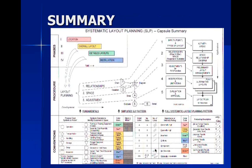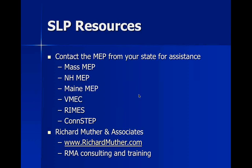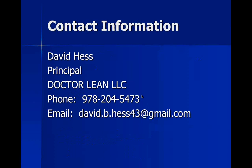I provided this last slide as a summary of everything we've talked about today — from the four phases to the three steps and the various diagrams. This is a capsule summary of what we've talked about today. A couple of things about resources: the New England Manufacturing Extension Partnerships — Mass, New Hampshire, Maine, Vermont, Rhode Island, and Connecticut — all have trained, certified SLP people. I already talked to Richard Muther and Associates, and they were very much in favor of what I've done here today, and they provide consulting and training services in this process.